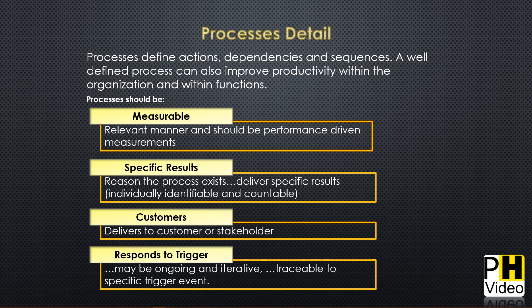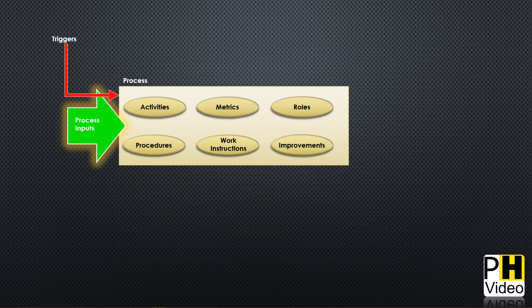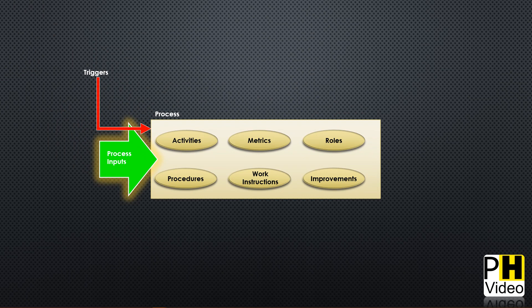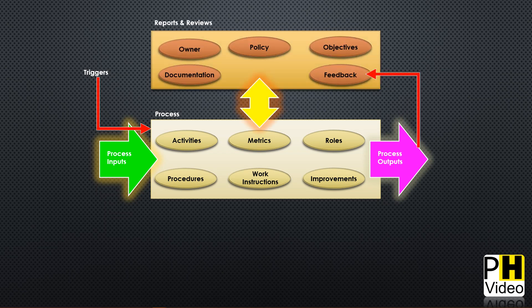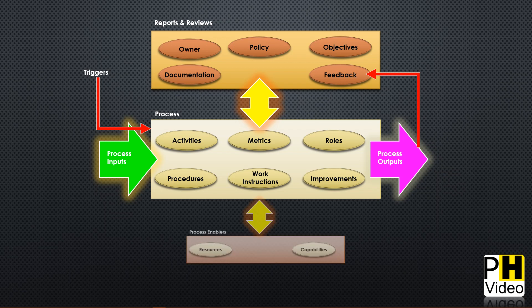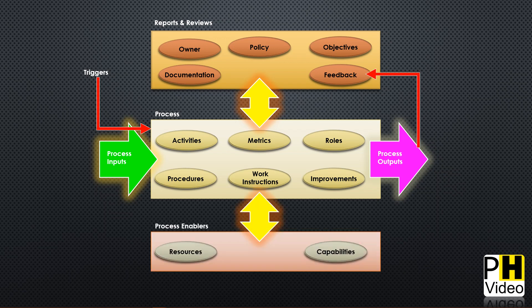A process graphic shows: activities, procedures, metrics, work instructions, roles, and improvements. Something triggers the process; the process takes inputs and produces a specific output. The output generates feedback, documentation, reports, and reviews, which is where policy comes into play. The process is fed by resources and capabilities.